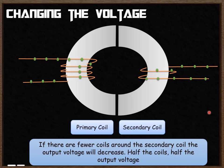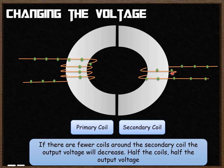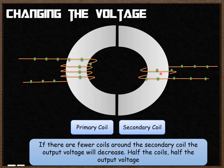Similarly, transformers can be used to reduce the voltage. Around the primary coil there might be three loops, but around the secondary coil there is just one loop. Because there are fewer coils around the secondary coil, the output voltage is decreased. If you halve the number of coils, you halve the output voltage.